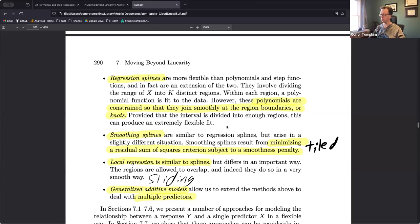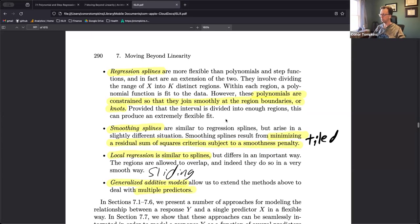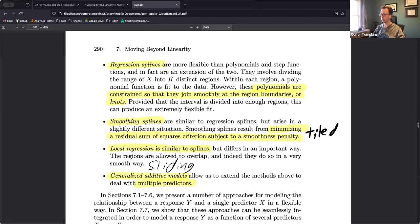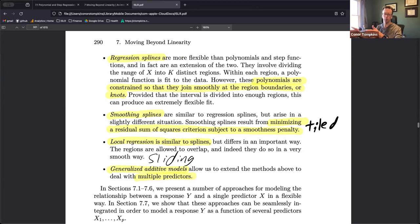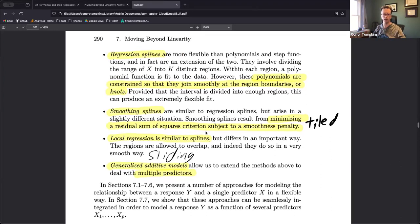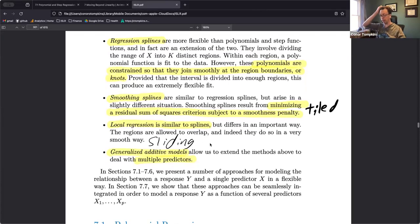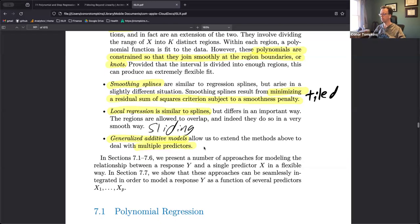There's some pretty good visualizations of that later on. Smoothing splines are similar to regression splines but they're smooth with some penalty, that goes back to the lambda argument we had. And then local regressions are similar to splines but the regions overlap. I found that smoothing splines is tiled where the regions don't overlap, you're moving one chunk at a time, whereas the local regression if they're allowed to overlap then it's sliding across some range.